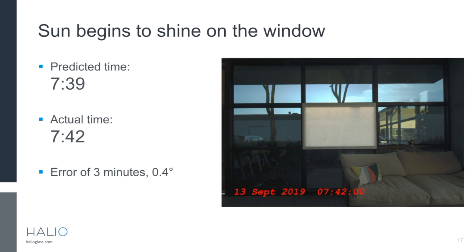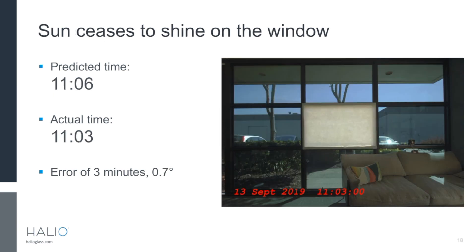The actual time the sun began to shine on the top of the window was 7:42 in the morning. The predicted time was 7:39 — an error of about three minutes, which is about a 0.4-degree angular error between the top edge of the window and the top of the adjacent building. The sun stopped shining on the window at 11:03, and we predicted it at 11:06 — again about three minutes, a 0.7-degree angular error between the bottom edge of the window and the front edge of the overhang.